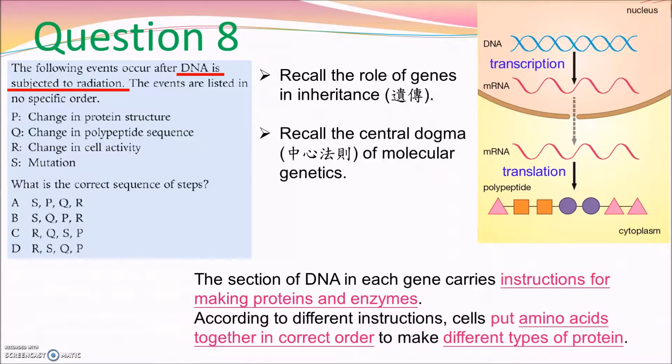In question 8, as we learn in the basic genetics, the gene is responsible for giving instructions for protein synthesis. Then, the protein can be used to produce enzymes to control metabolic activities. That's why you need to recall the role of genes in inheritance. Then, different amino acid sequences will lead to different protein structures. In chapter 27, we learn that the central dogma, in simple words, it is talking about the mRNA synthesis from DNA by transcription, and protein synthesis from mRNA by translation. Therefore, we realize that the change in protein structure should be caused by the change in DNA or chromosome. That means the mutation.